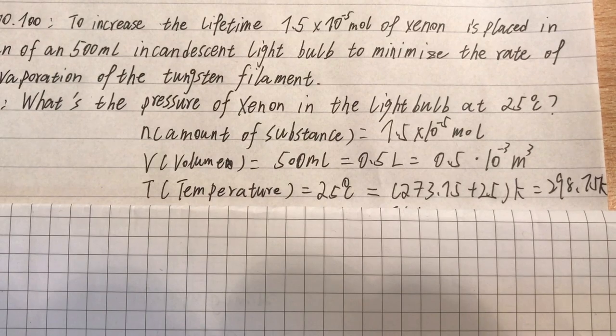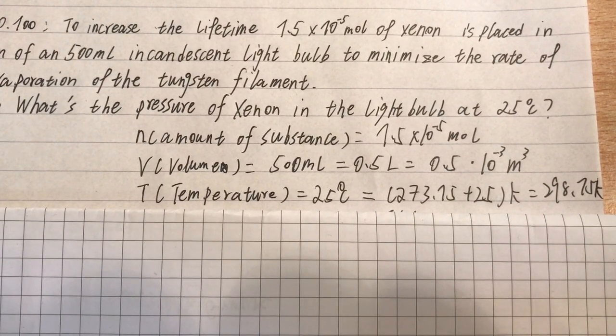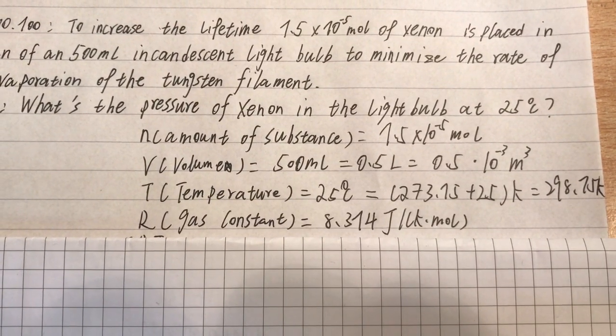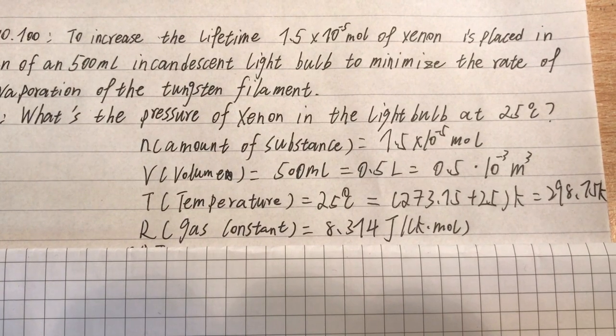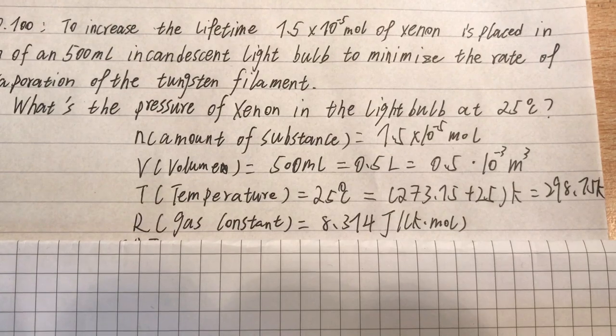Then we have the temperature, which is equal to 25 degrees, and is equal to 298.15 Kelvin. So, here we have the gas constant of xenon, which is equal to 8.314 Joules per Kelvin mole.